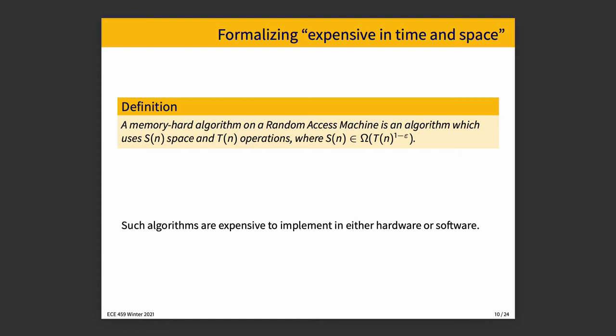If you want a formal definition of expensive in time and space: a memory-hard algorithm in a random access machine is one that uses S(N) space and T(N) operations, where S(N) is in omega of T. What that really means is that memory-hard algorithms are expensive to implement in either hardware or software — there are no shortcuts. Intuitively, a sequential memory-hard function is one where the fastest sequential algorithm is memory-hard, and it is impossible for a parallel algorithm to asymptotically achieve lower cost. Some cryptographic algorithms are forcibly sequential because to do step N+1 you need the result from step N, which makes it very hard to parallelize that particular computation.